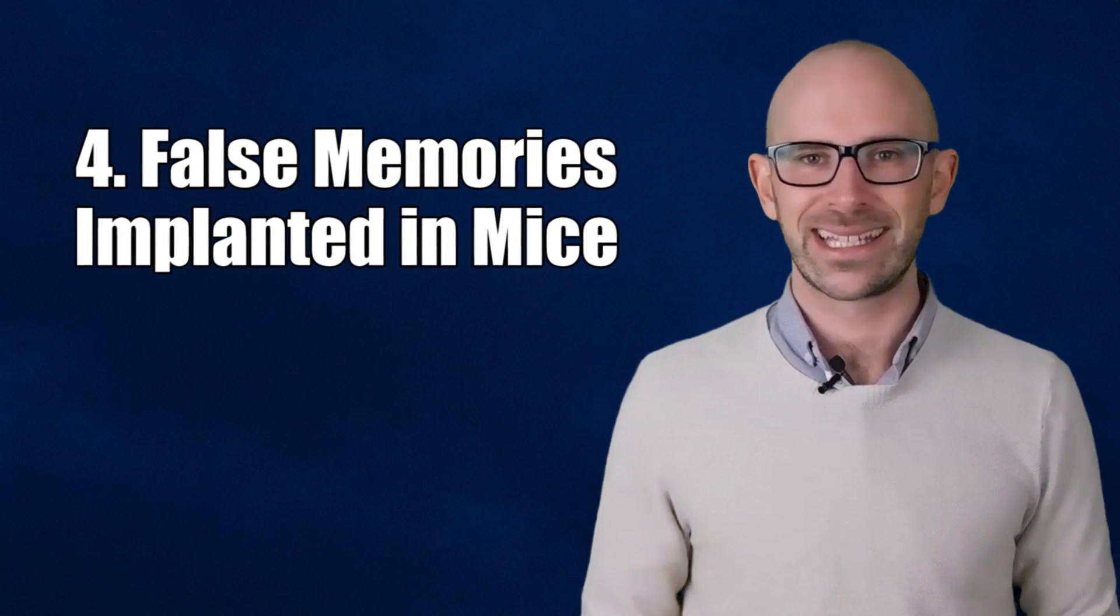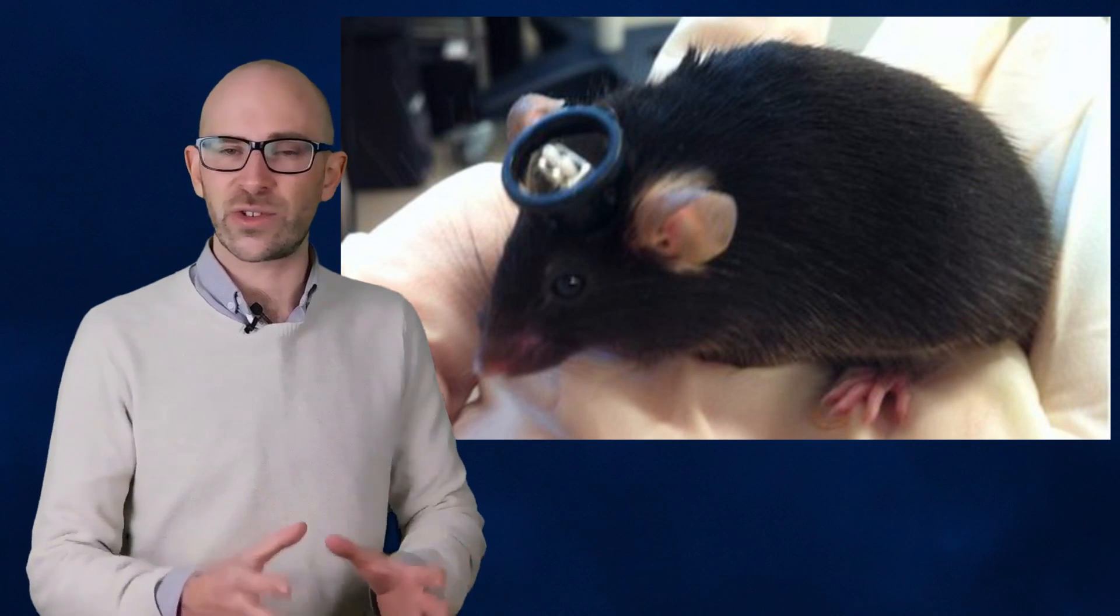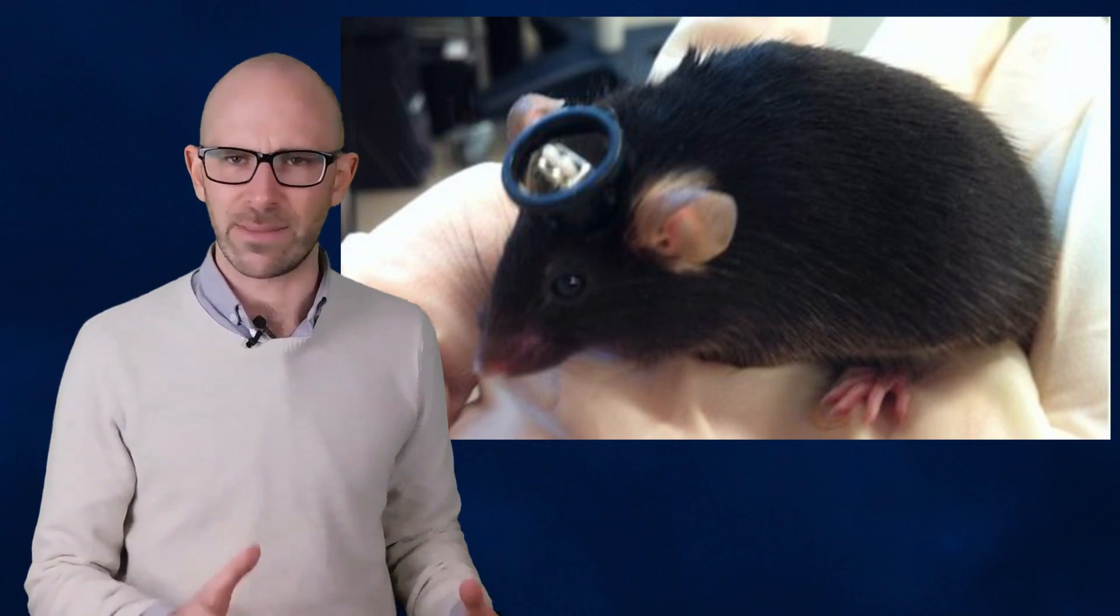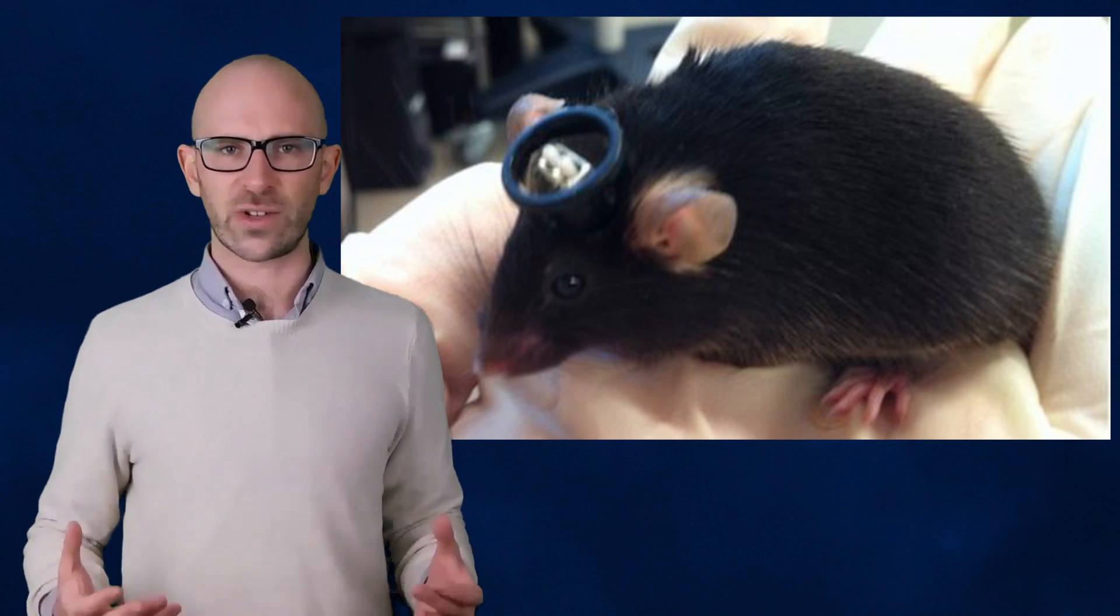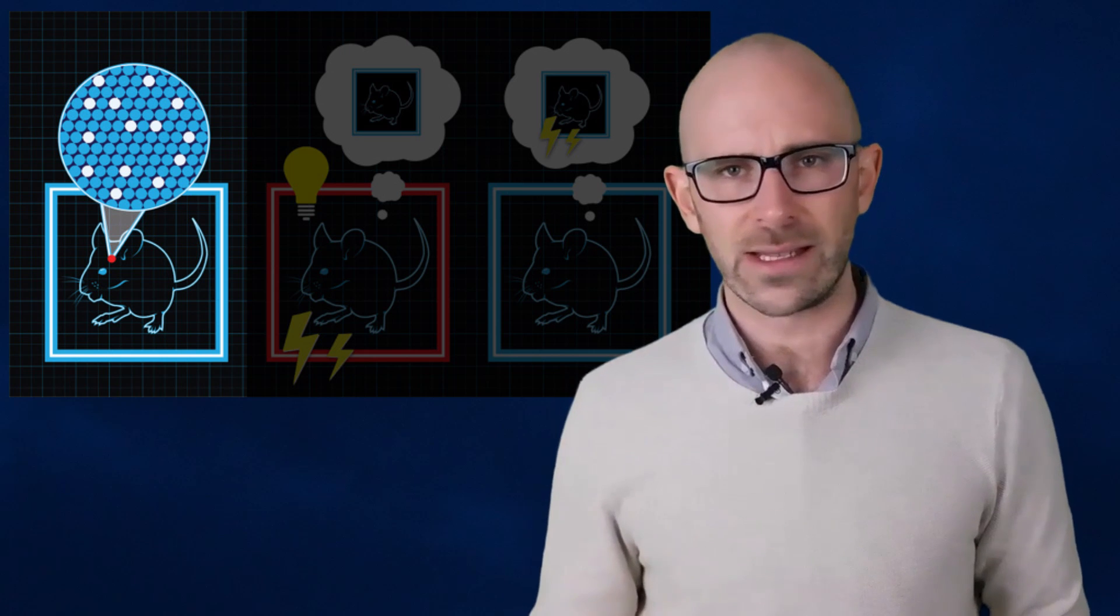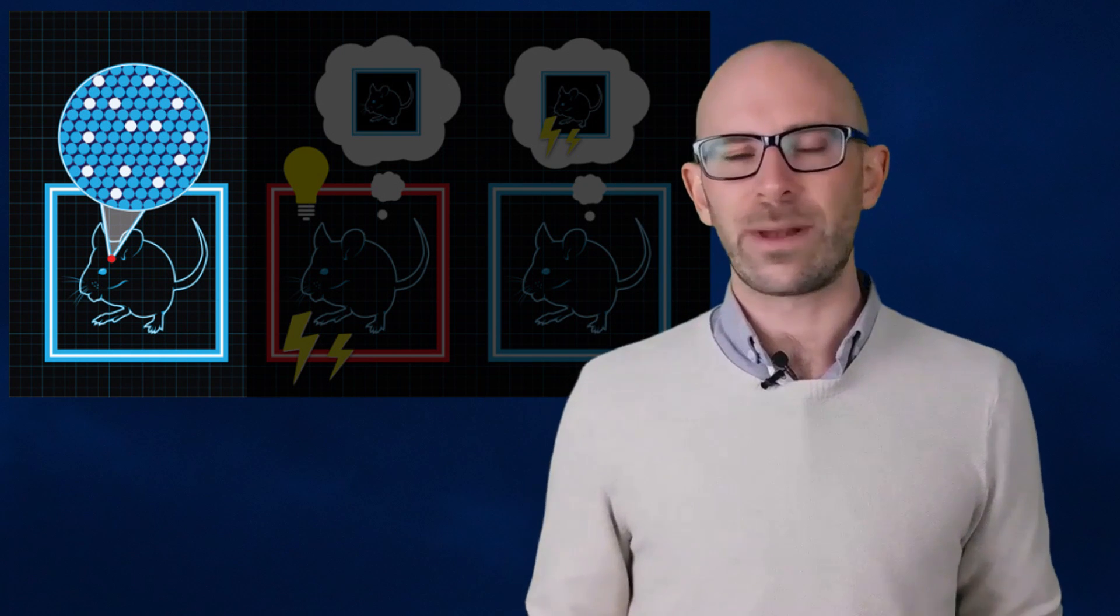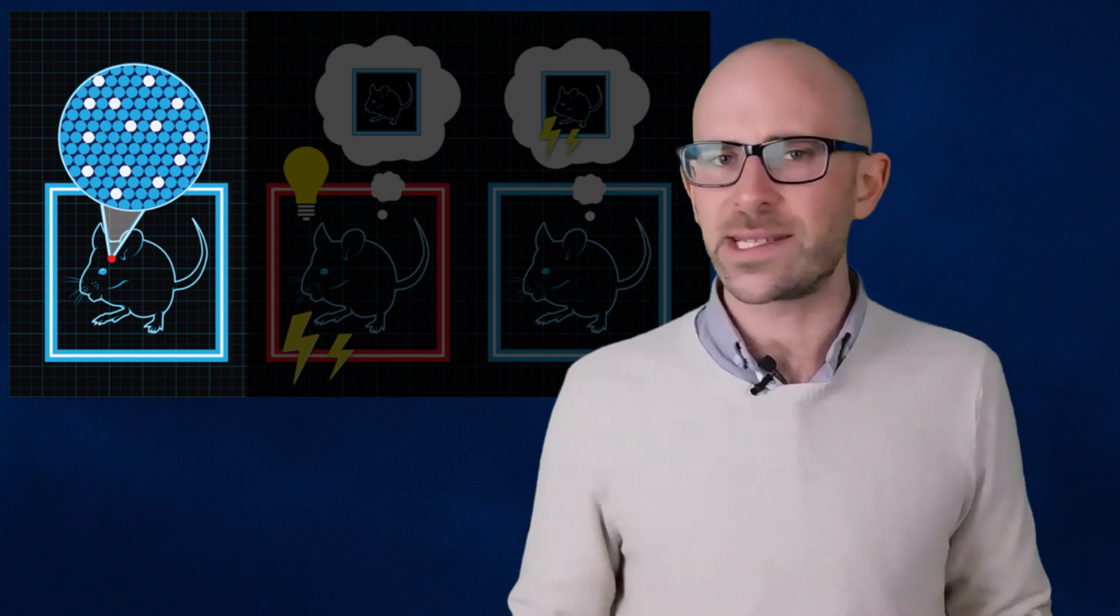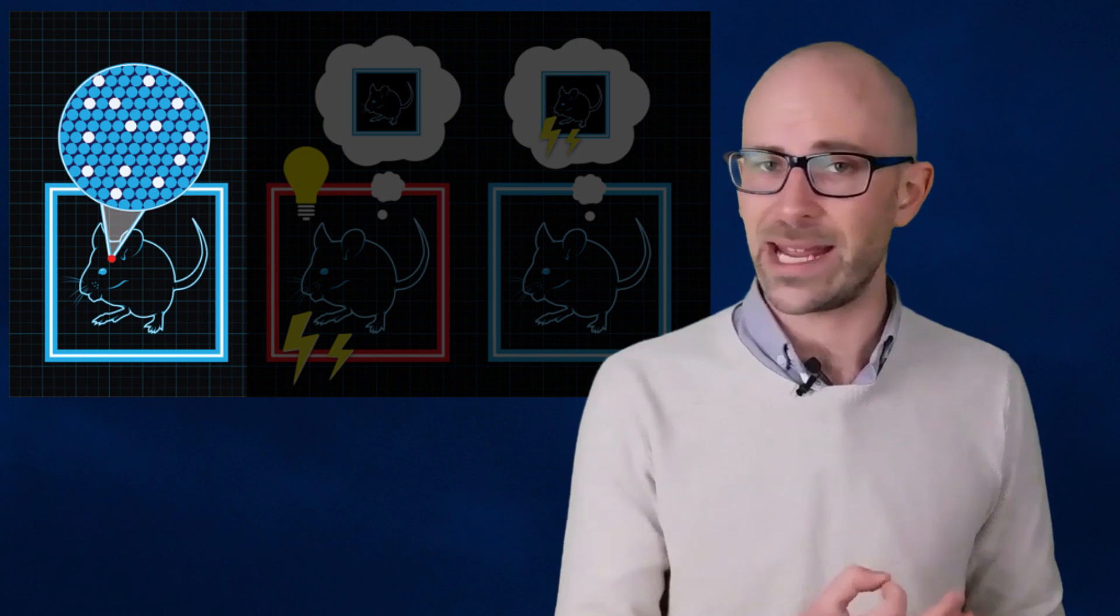False Memories Implanted in Mice. Using optical fibers, a team of researchers was able to manipulate mice into believing a benign area was dangerous by giving them false bad memories of it. They simply placed the mice in the harmless space, then used a flash of light to trigger the memory forming process. They placed the mice in another area and triggered the flash again, only this time the mice were given a mild electric shock. When the animals were placed back in the first area, they began to show signs of fear simply because their brain now associated the first area with the pain.